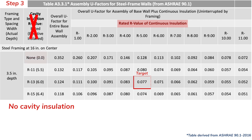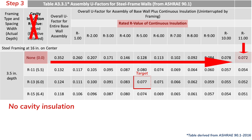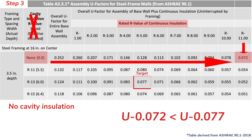Starting at none under the cavity insulation column, you then go horizontally across and you'll notice that the first point at which we get to a U-factor of 0.077 or less is when we have an R11 continuous insulation value.